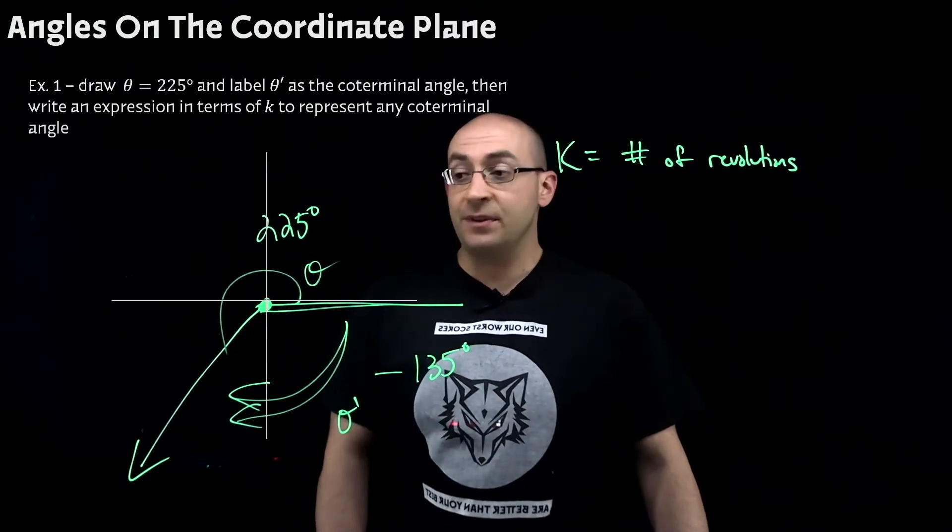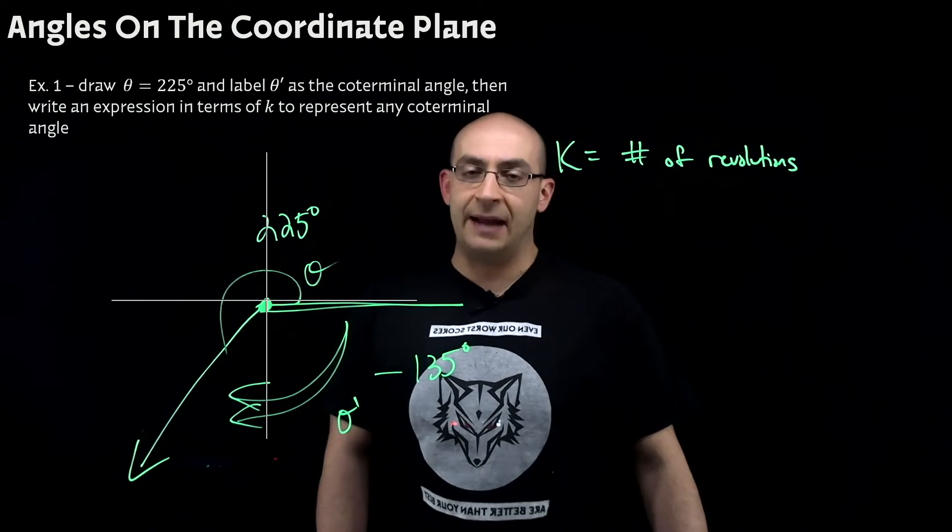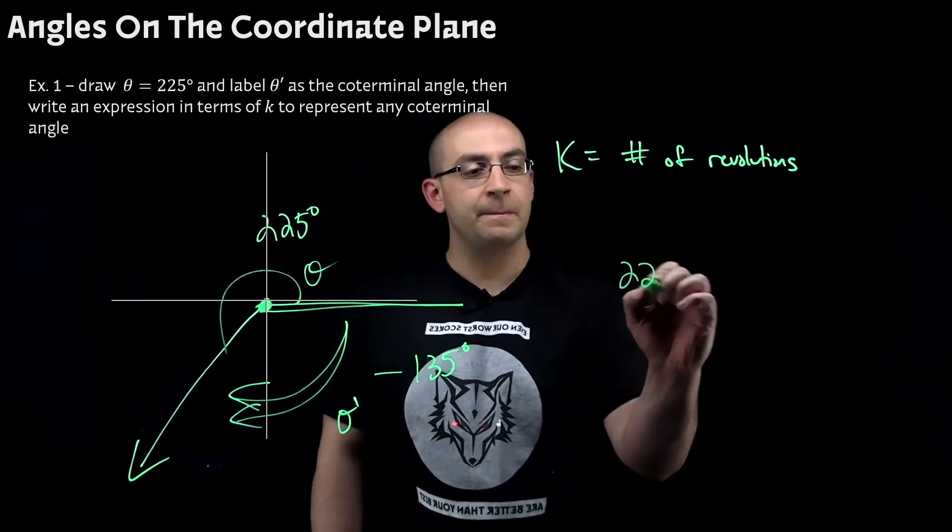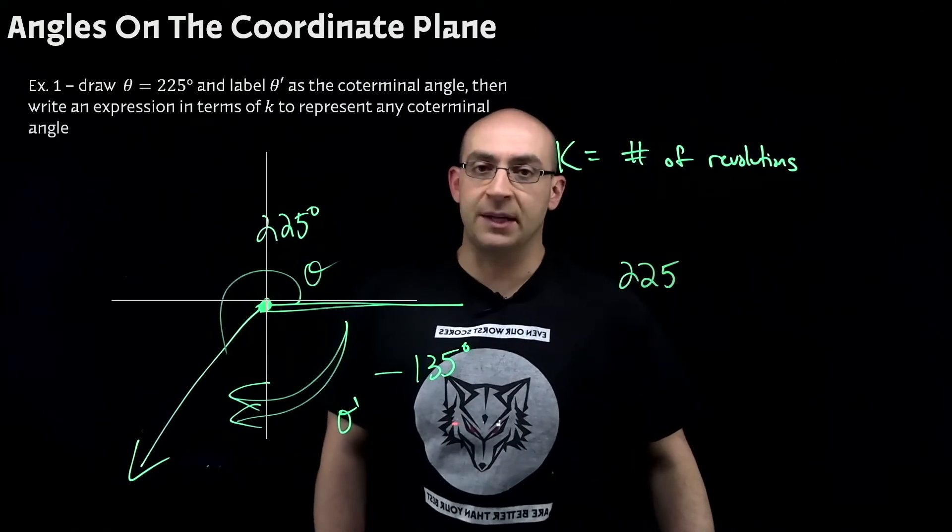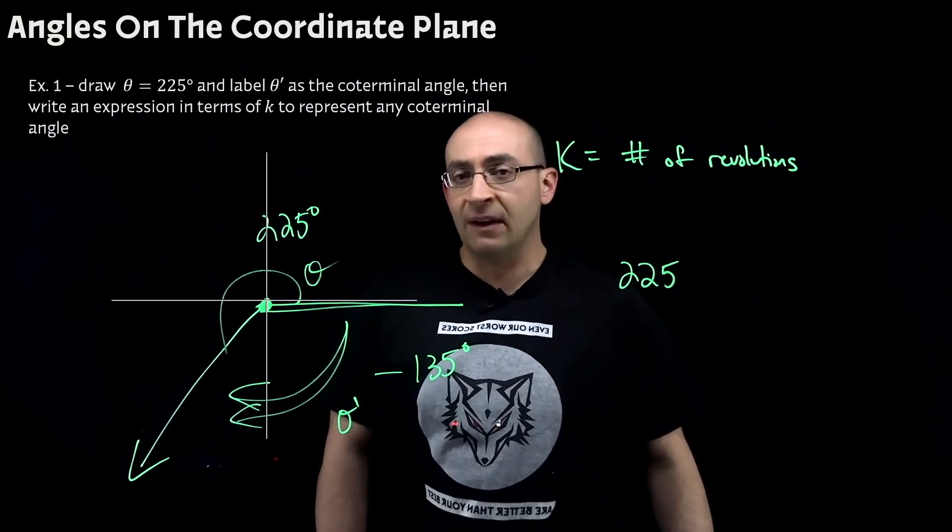Here's what we need to know. First, we need to know the degree measurement of the initial angle. That one was going to be 225. Next, we need to know what one revolution represents. Well, we're talking about a circle. So one revolution, meaning one time all the way around a circle, gets you to your starting point, which is 360 degrees.